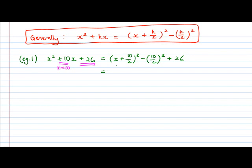Right? So if we simplify this, 10 over 2 is 5. 10 over 2 is 5. 5 square is 25. So the expression after completing the square looks like this.